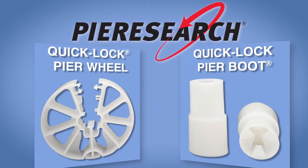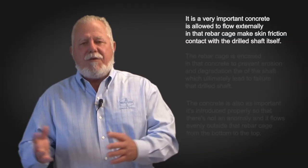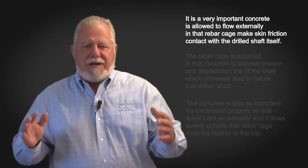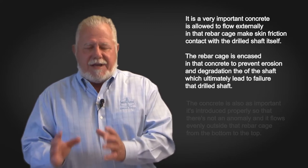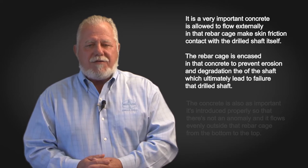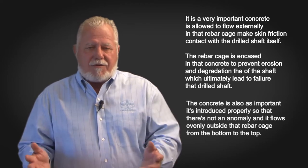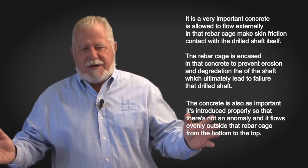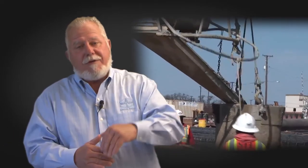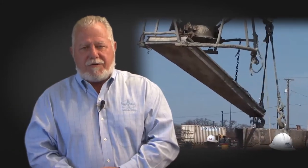To centralize the rebar cage, we recommend quick-lock spacer wheels and spacer boots on the bottom of the vertical rebars. It's very important that concrete is allowed to flow externally of that rebar cage and make skin friction contact with the drilled shaft itself, and that the rebar cage is encased in concrete to prevent erosion and degradation of the shaft. The concrete must be introduced properly so it flows evenly outside the rebar cage from bottom to top — either poured through the top or introduced through a tremie pipe, displacing any fluid to ensure 100% flowability throughout the shaft.